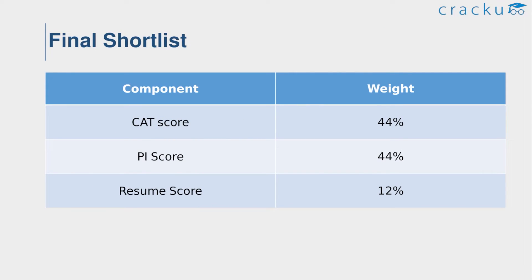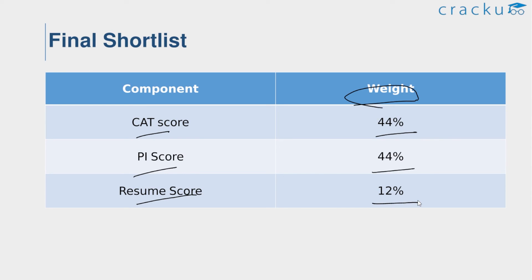In the final stage, shortlisted candidates are asked to appear for the personal interview. After the conclusion of the personal interview process, a category-wise merit list is prepared based on candidates' performance in CAT and the personal interview. The final score for selection is calculated with CAT score at 44%, personal interview score at 44%, and the remaining 12% for other factors. This completes the selection process for IIM Kozhikode.